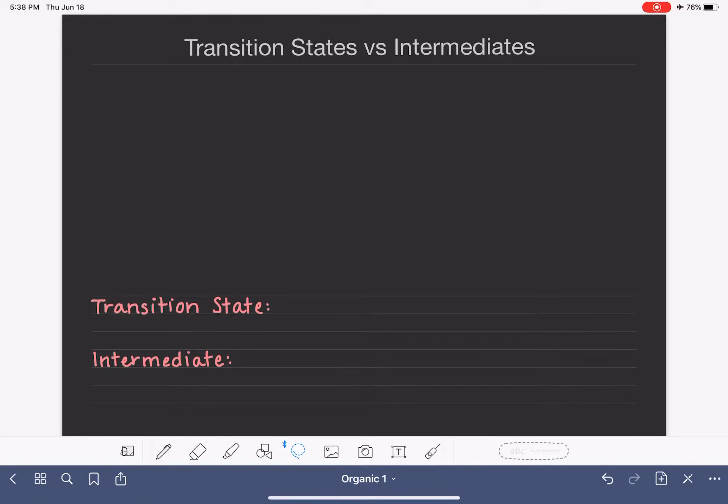Transition states and intermediates are both molecules or substances that are formed as a reactant is being converted to a product.